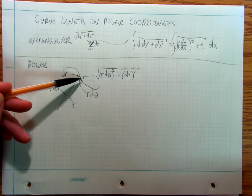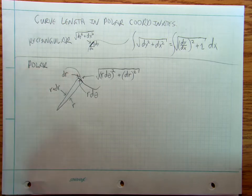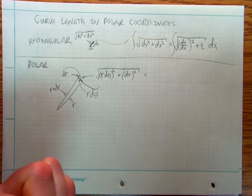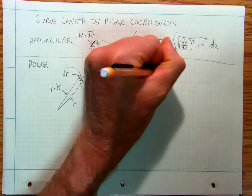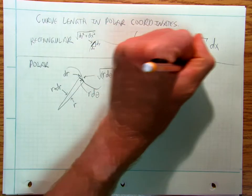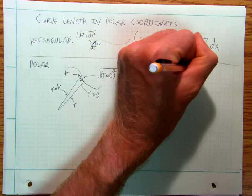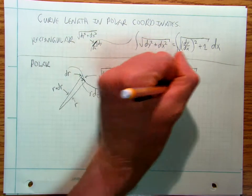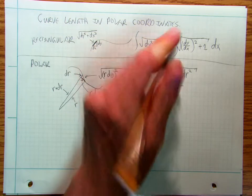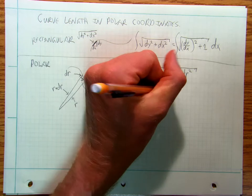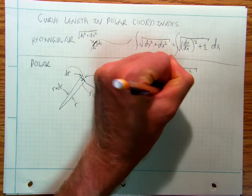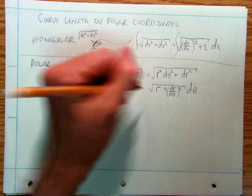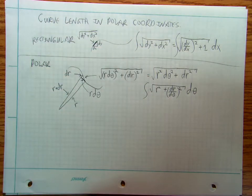We take the square root of r squared dθ squared plus dr squared. Just like before, I divide everything by dθ squared, giving us the square root of r squared plus (dr/dθ) squared, times dθ. Then we integrate that to find the entire curve length.